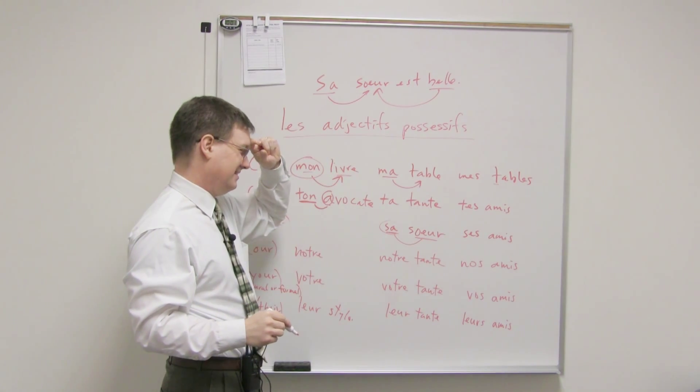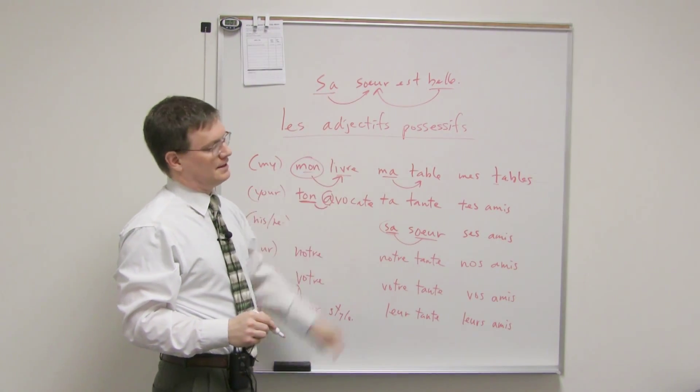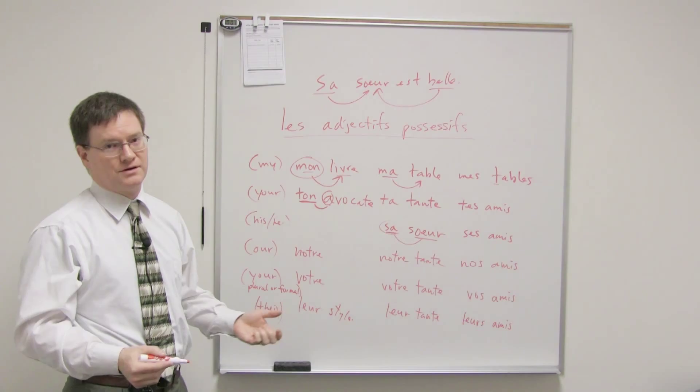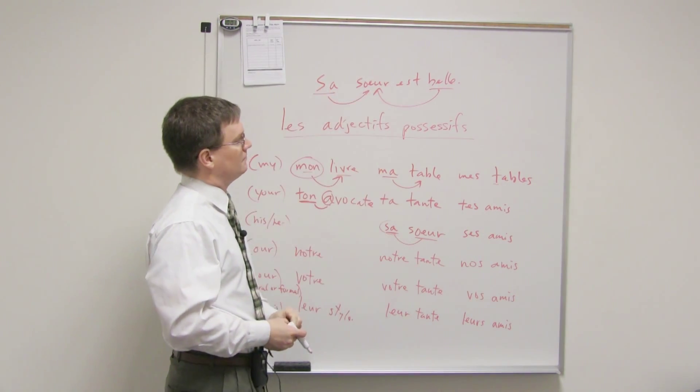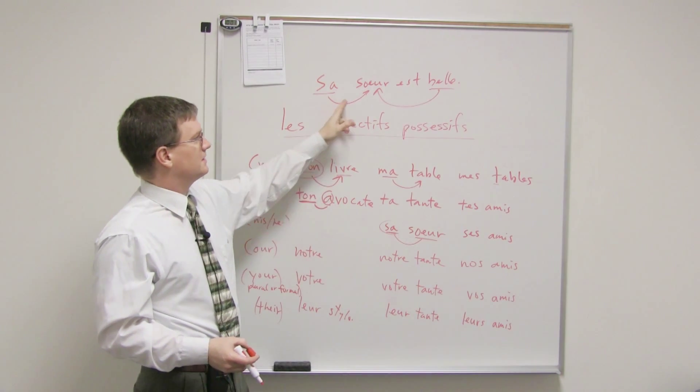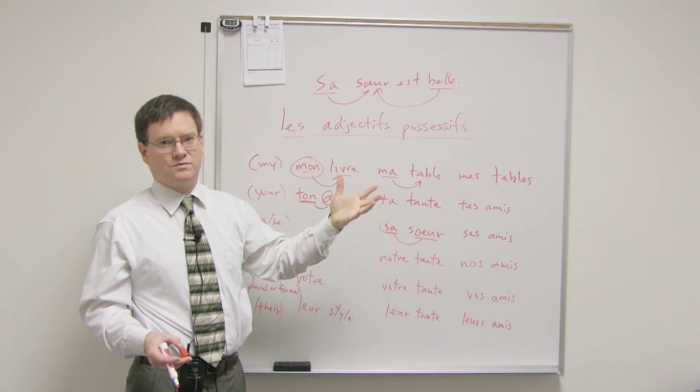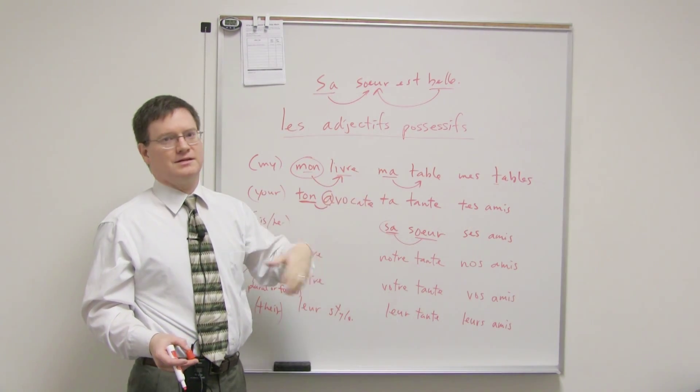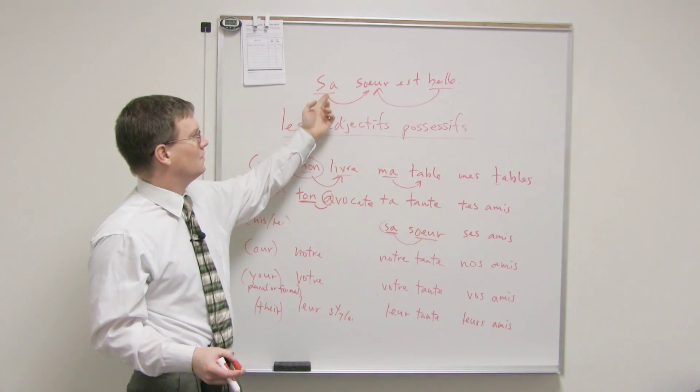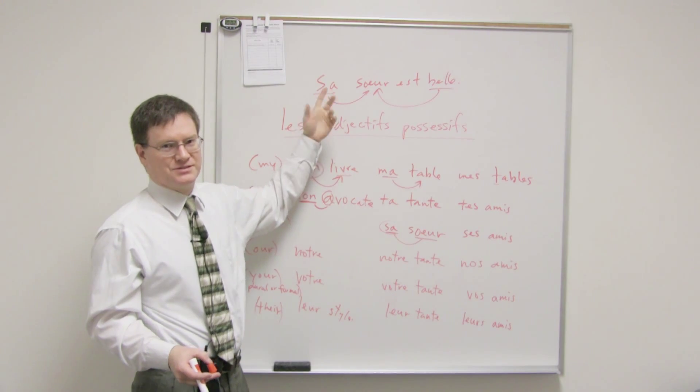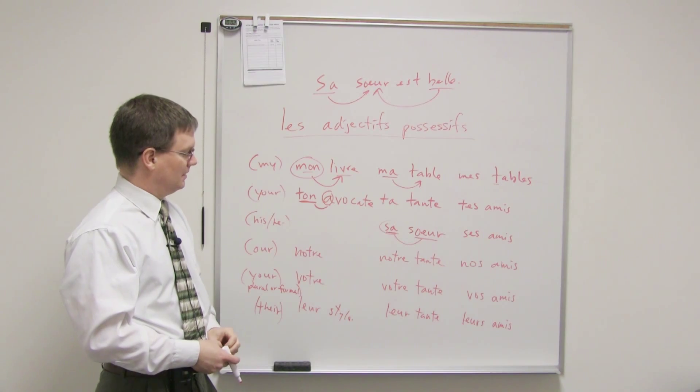So, this is kind of a little tricky. You have to understand that son, sa, ses can mean his or her. And it's the noun that determines that. So, it's really quite easy to determine, because usually you've already mentioned the person. And then you just say his sister is. Do you know Bill? His sister is beautiful, for example. So, you generally know whether it represents his or her based on the context. So, it's not quite so bad.